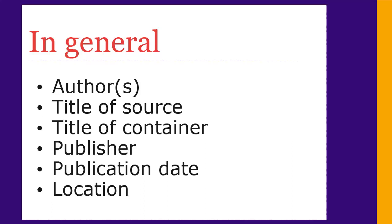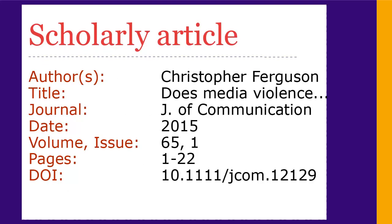These pieces of information look a little different for different types of sources. For a scholarly journal article, you'll need the author and title of the article, the title of the journal it's published in, and the date. The location information includes the volume, issue, pages, and the DOI, which is a unique ID number assigned to the article. The same information is required whether the article is in print or online.